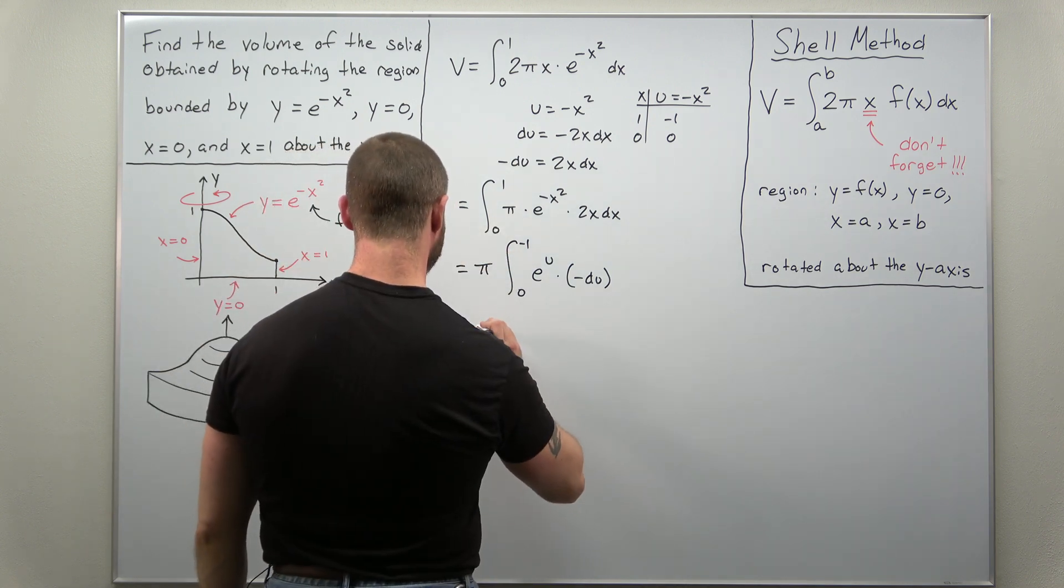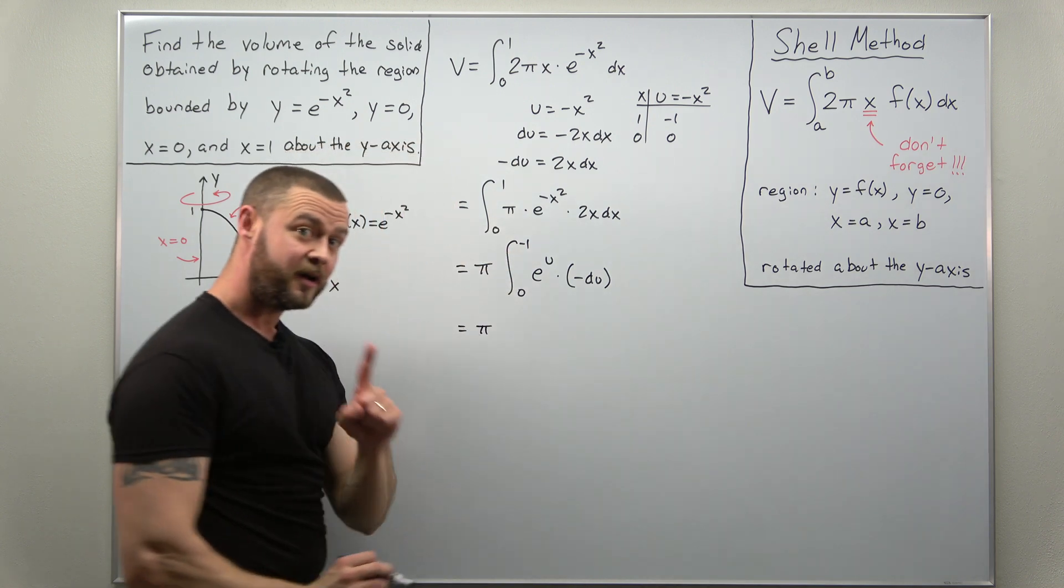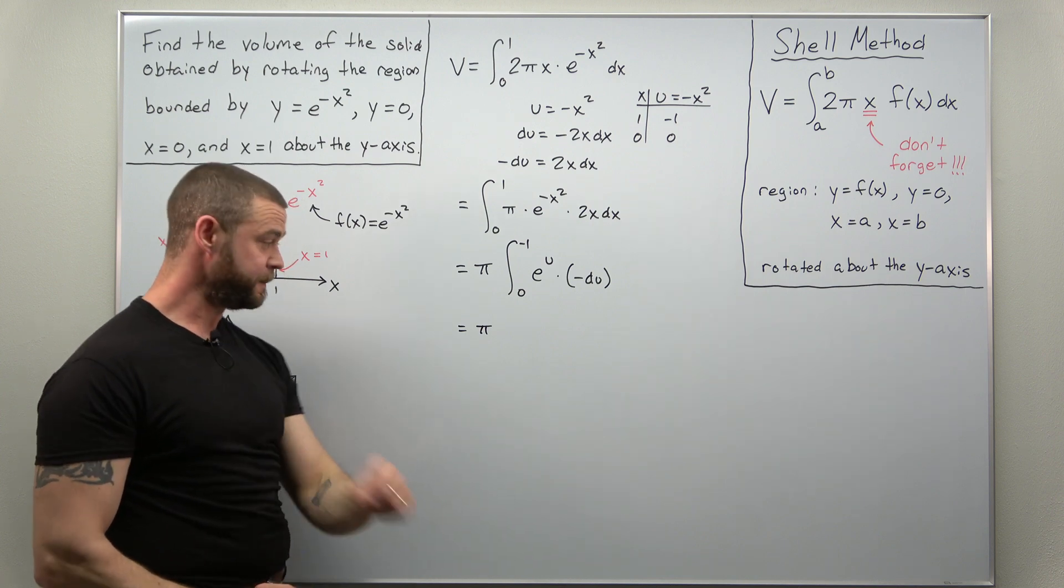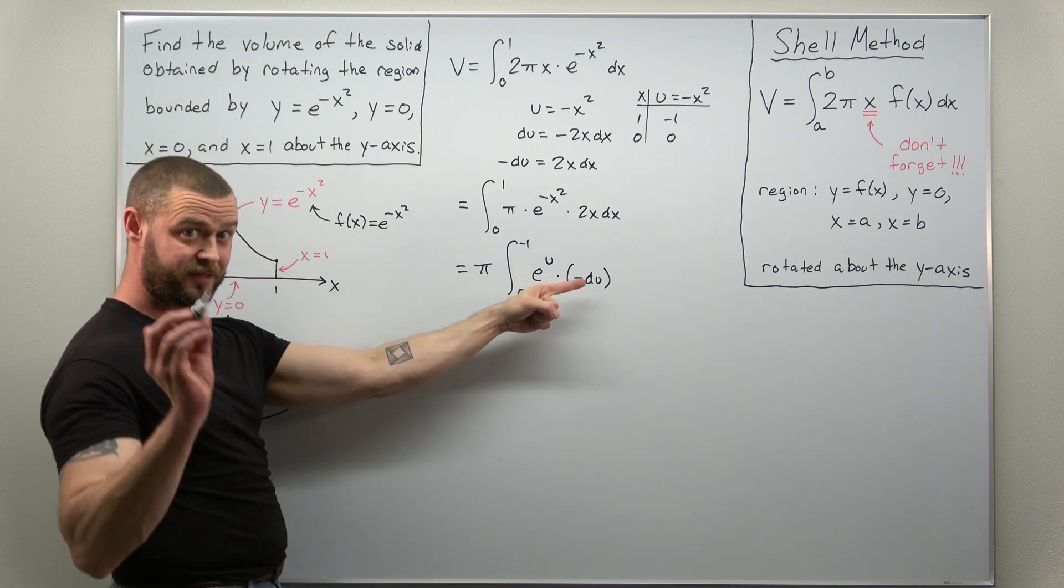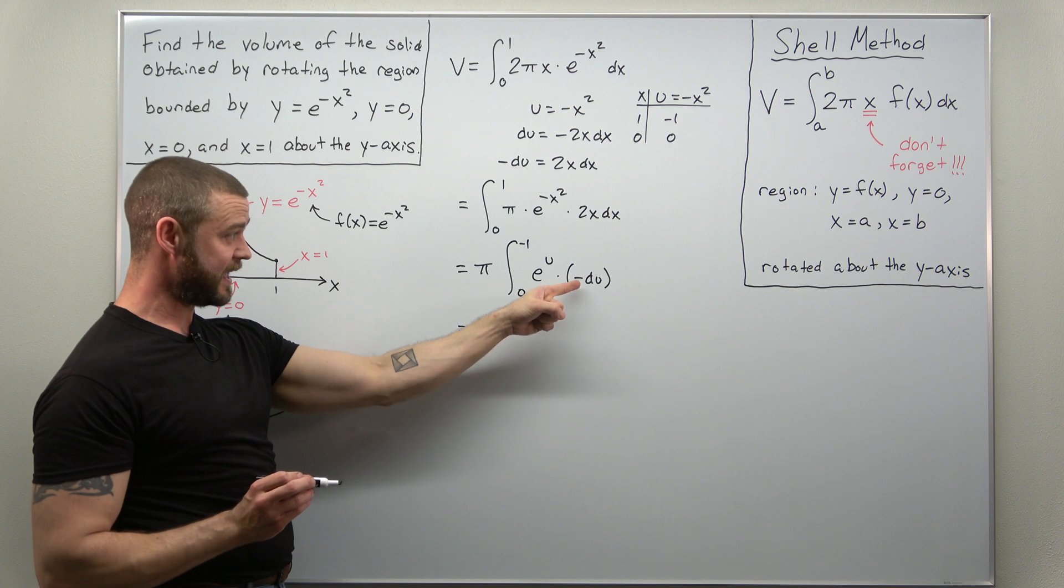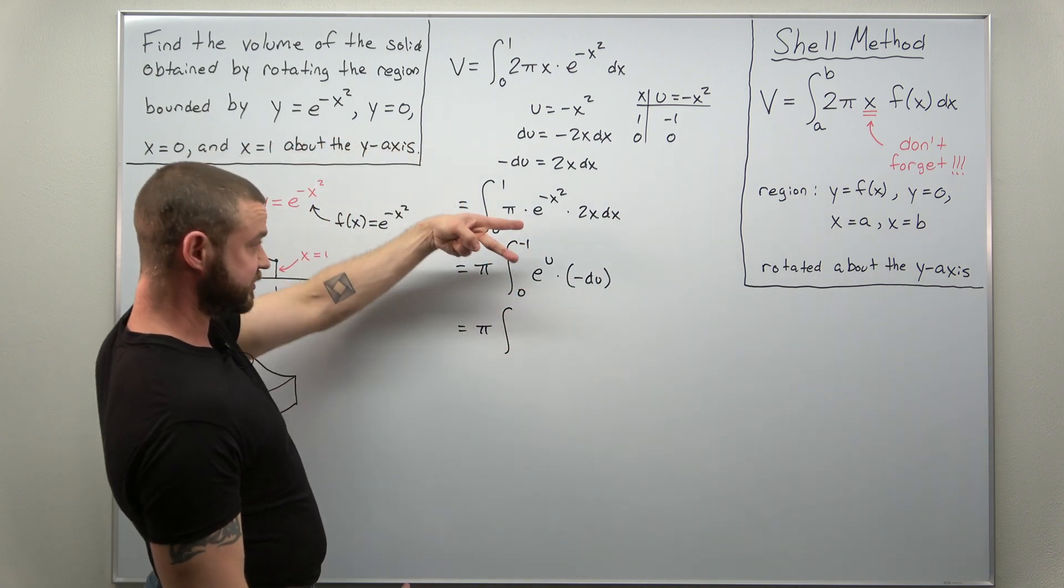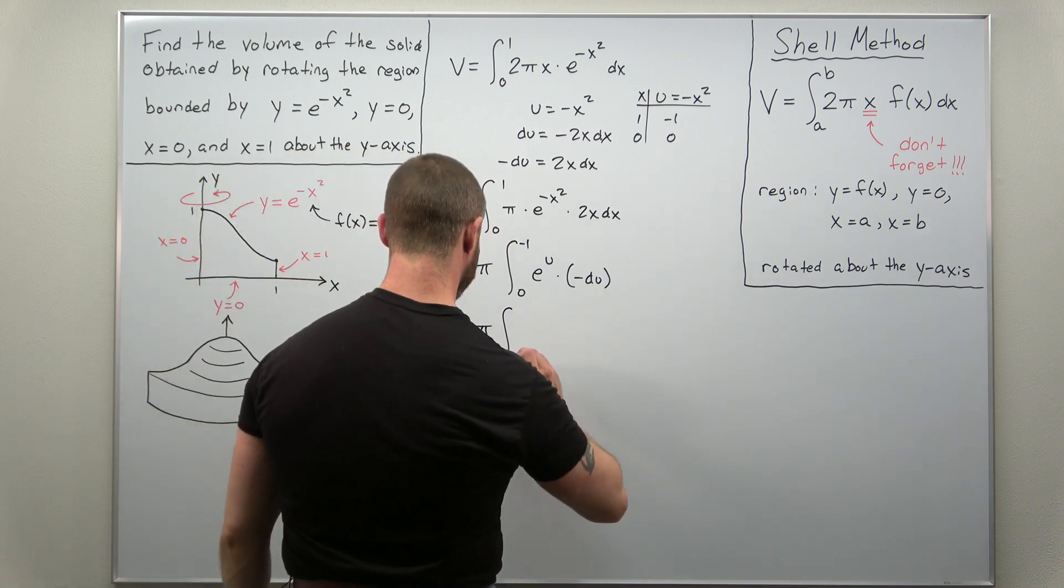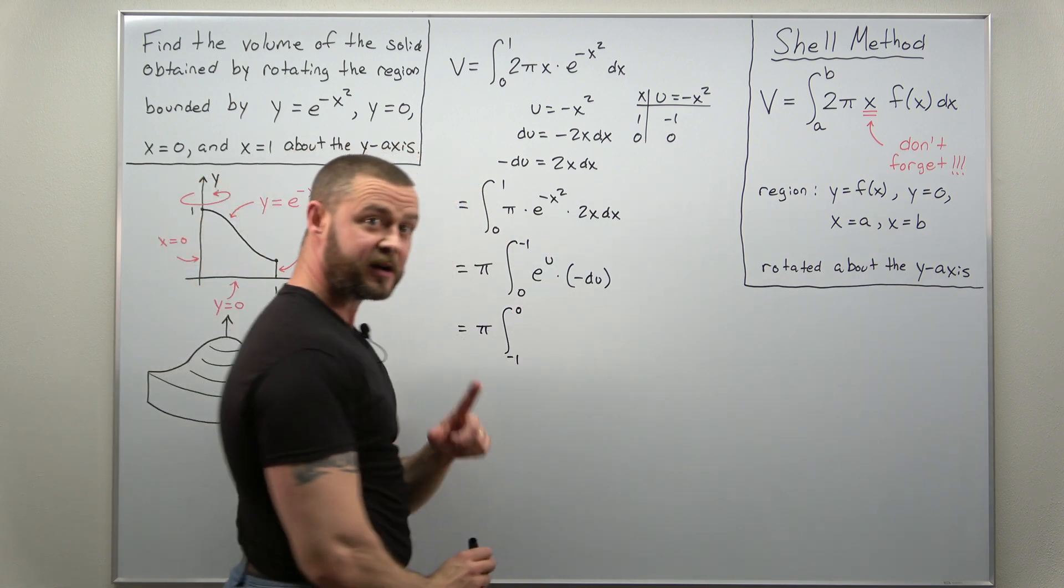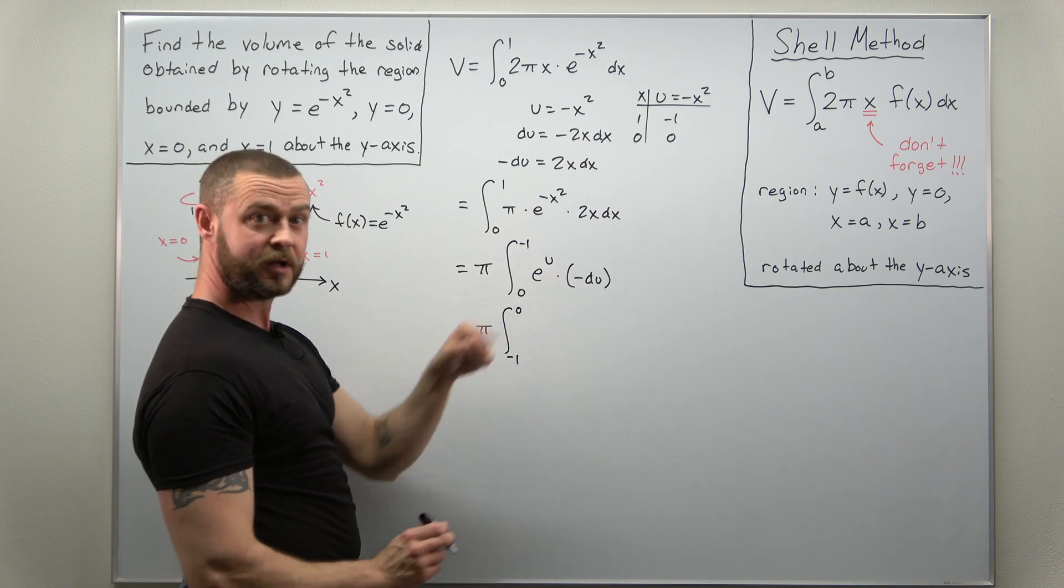So I can rewrite this as the positive version. Again, we're flipping the limits, getting an extra negative to cancel that one. And our integral now goes from negative 1 to 0. We're flipping those limits. Everything else stays the same. We have e to the u times du.